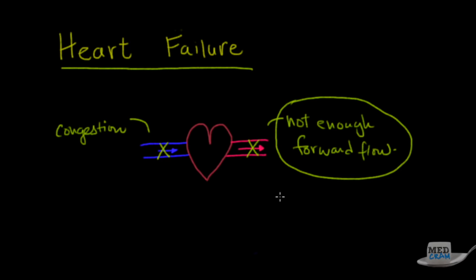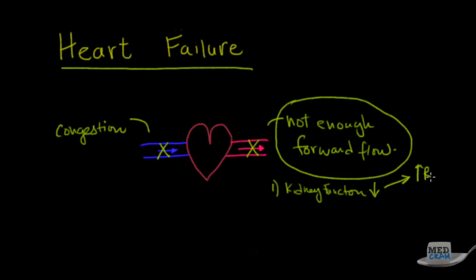Not enough forward flow means, number one, kidney function decreases. Think about all of the organs — all of them — that rely on blood perfusion. If the kidneys are not getting enough blood, kidney function decreases. That is going to activate the renin-angiotensin system, or the RAS system. It will also activate the antidiuretic hormone system. This is going to increase the amount of fluid retention you have and could exacerbate your congestive heart failure.